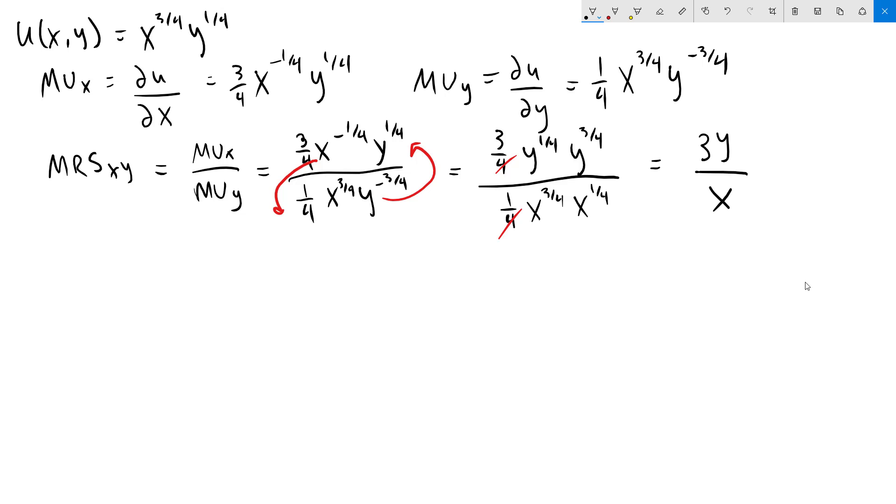The next thing that we're going to do is solve for our demand functions for x and y. To do that, we need to set up our system of equations. This is where our budget line comes in. Px times x plus Py times y equals m. That is to say that our total amount spent on x plus our total amount spent on y needs to add up to our total income of m.